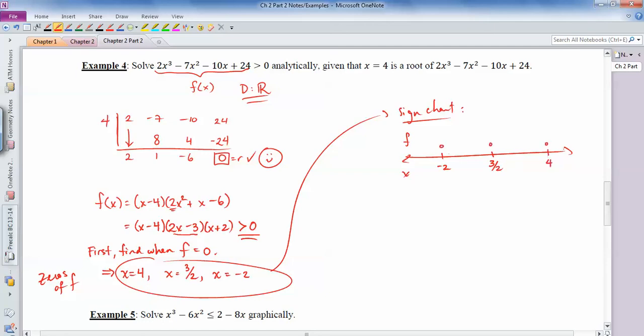And if I plug in like negative 3, I end up with this being negative, this being negative, and this being negative. So the whole thing is negative. If I plug in 0, I get negative, negative, positive. So that's a positive. If I plug in, let's say, 3, then I get negative, positive, positive. And all those multiply together as negative. And if I plug in something like 100, I get positive, positive, positive. So that's that.